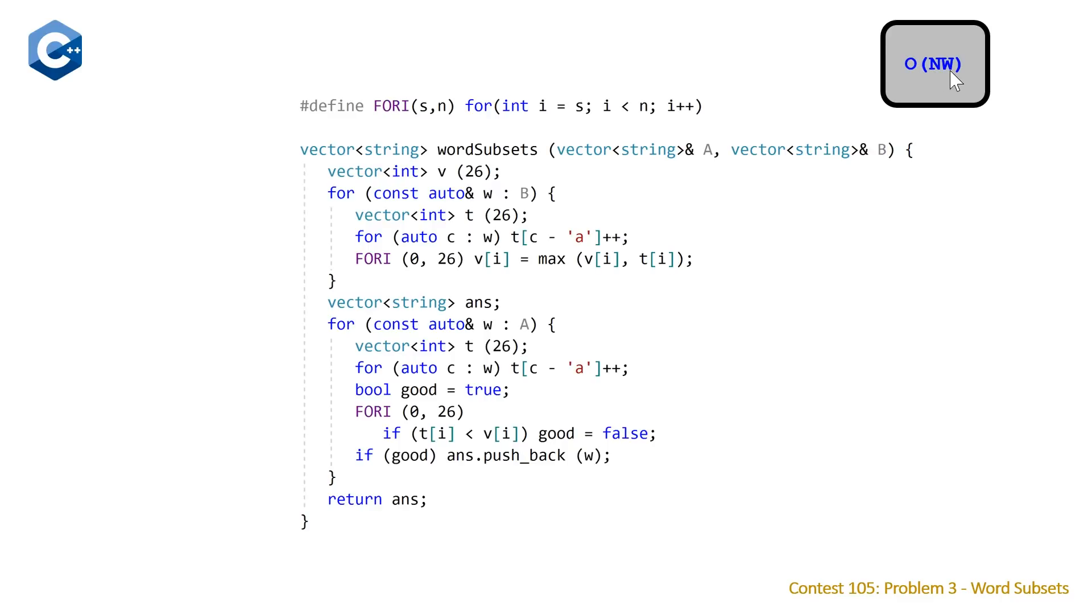So note that here, W is 10, the upper bound on W is 10, and the upper bound on n is 10 to the fifth. So overall, we're basically going to have at most 10 to the 6 operations, which is less than 10 to the 8, which is usually what the limit is in terms of number of operations that can be executed.